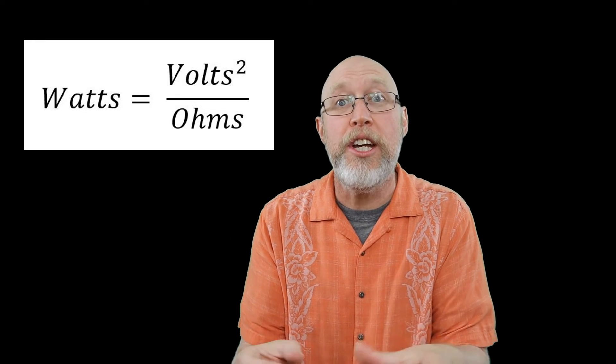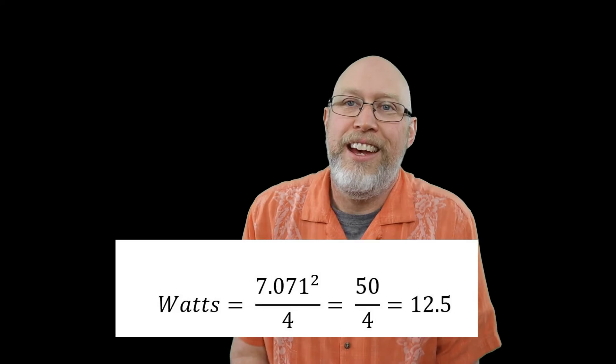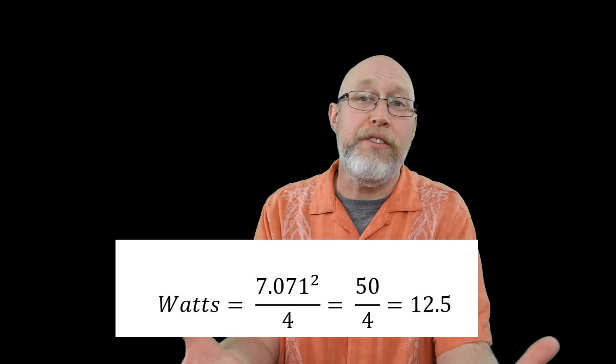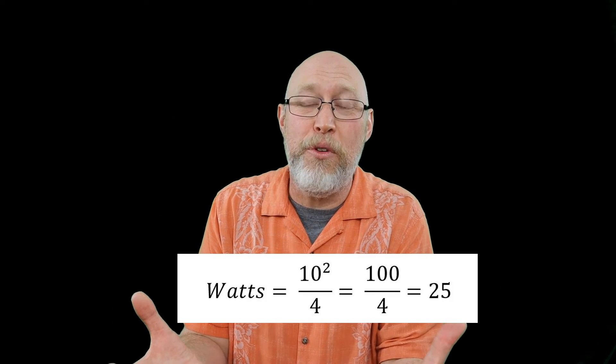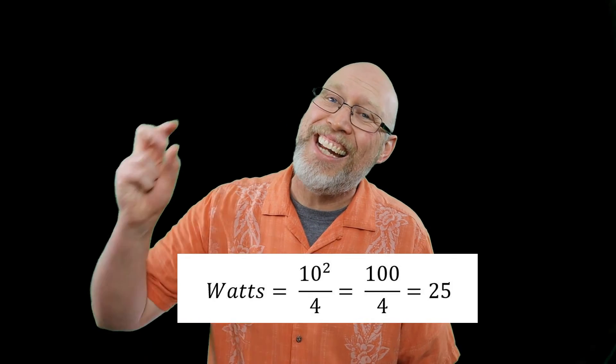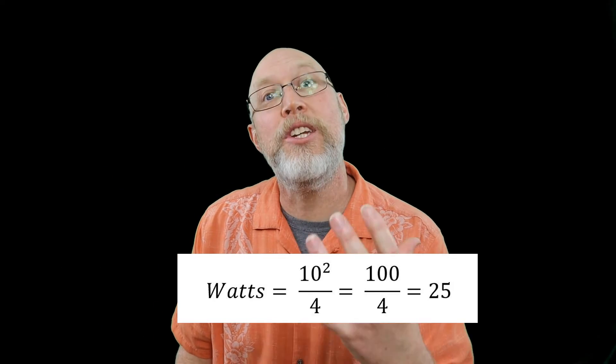Hang on a second we don't measure amplifier power in volts. We measure it in watts. So we need to convert this to watts using Ohm's law. Right here's the formula. We're just going to square the voltage and divide it by our resistance. And that's going to give us 12.5 watts of continuous power. And hey let me show you something cool. You may have heard that peak power is double your RMS power. Remember we had 10 volts on this waveform. So 10 squared is 100 and 100 divided by our 4 ohms is 25 which is exactly double of the 12.5 that we just got.